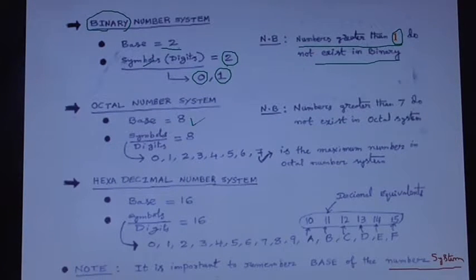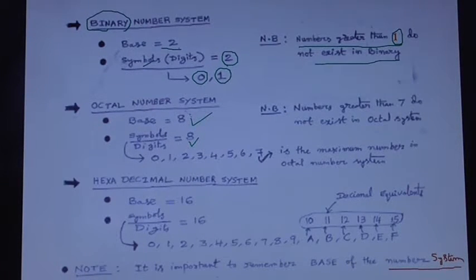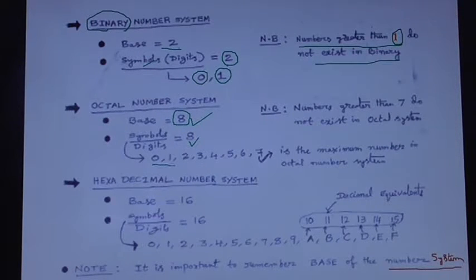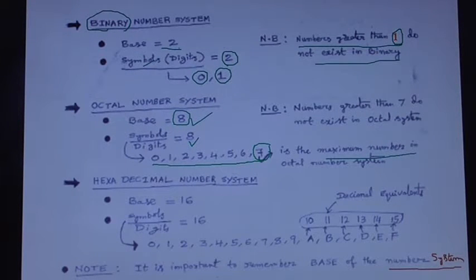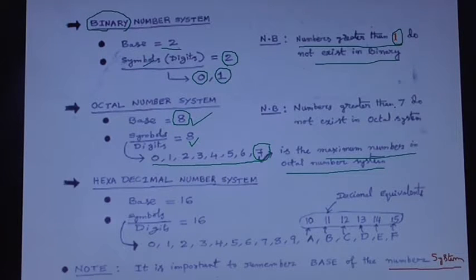For the octal number system, the base is 8. So the digits or symbols available are 8 in total. The octal number system has numbers starting from 0 to 7. Seven is the maximum number in the octal number system. Numbers greater than 7 do not exist in the octal number system.